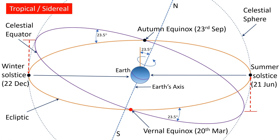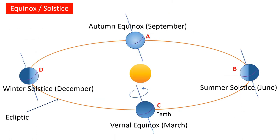The reason these equinoxes and solstices are called spring and autumn equinoxes and summer and winter solstices by people in the northern hemisphere is a historic one. Historically, and even now, most of the Earth's population is concentrated in the northern hemisphere, and most of these references came from texts written by people living there. On the next screen, I have shown the equinoxes and solstices from a real, non-geocentric viewpoint to make it clearer.